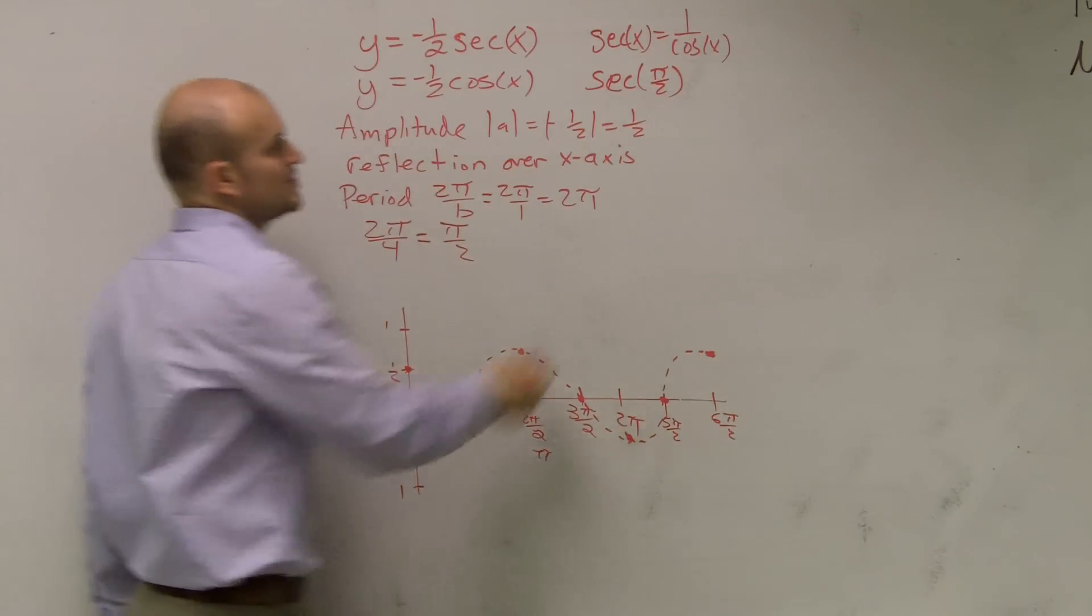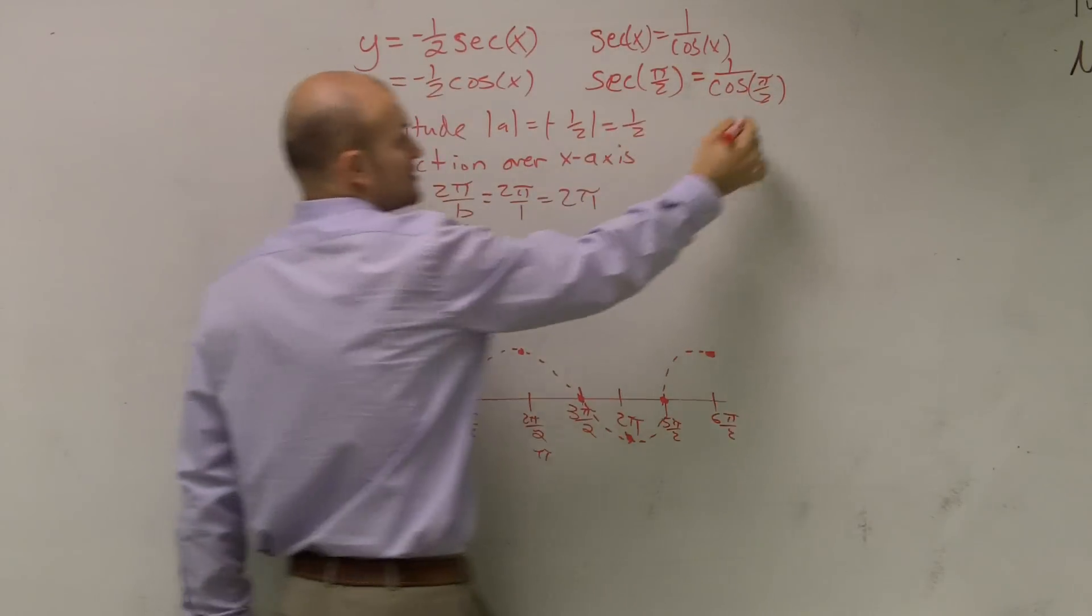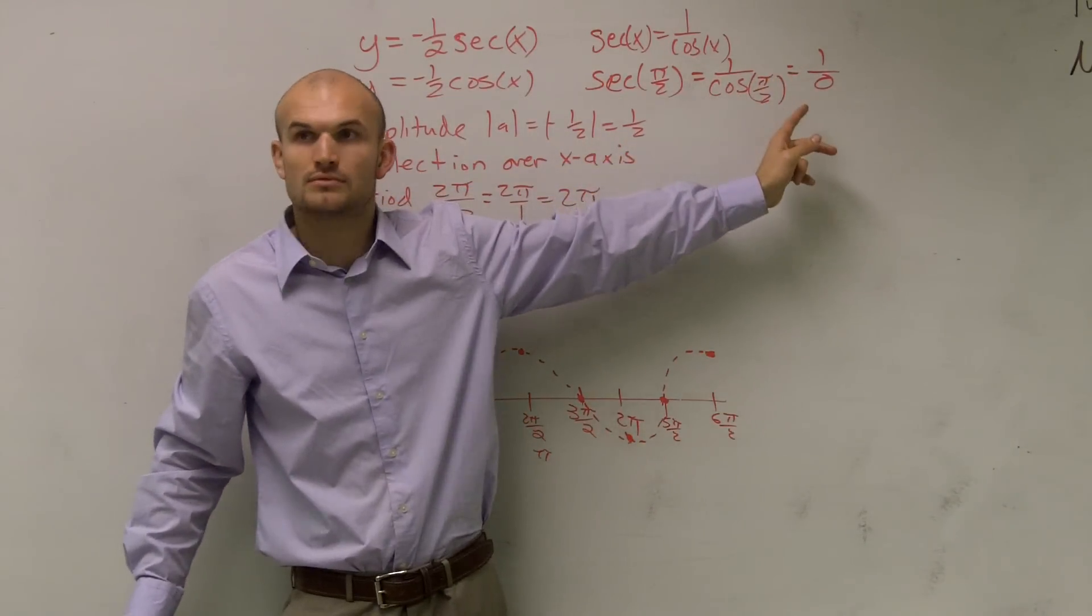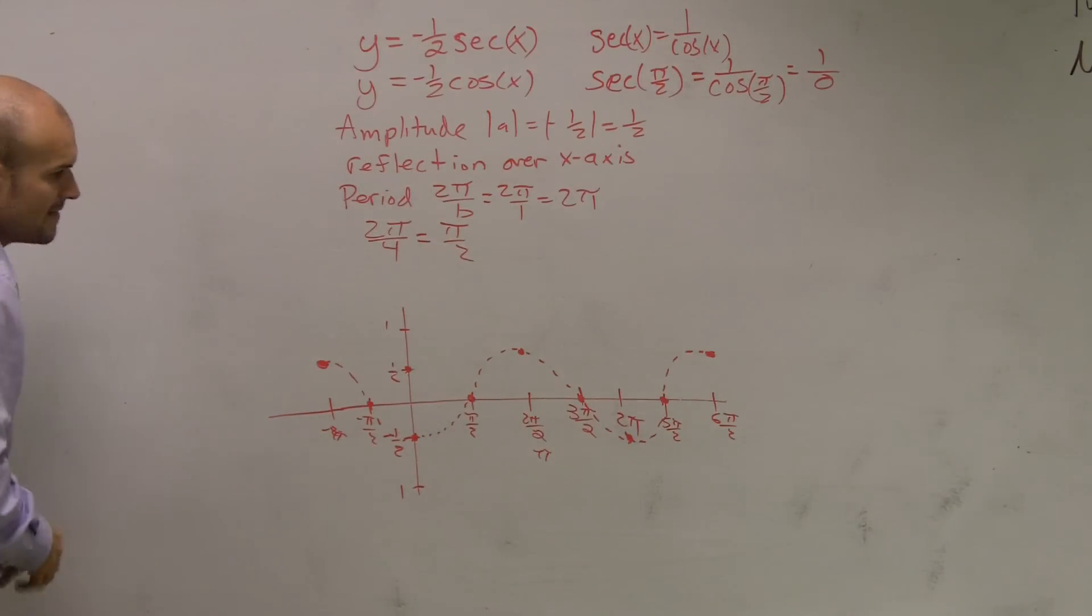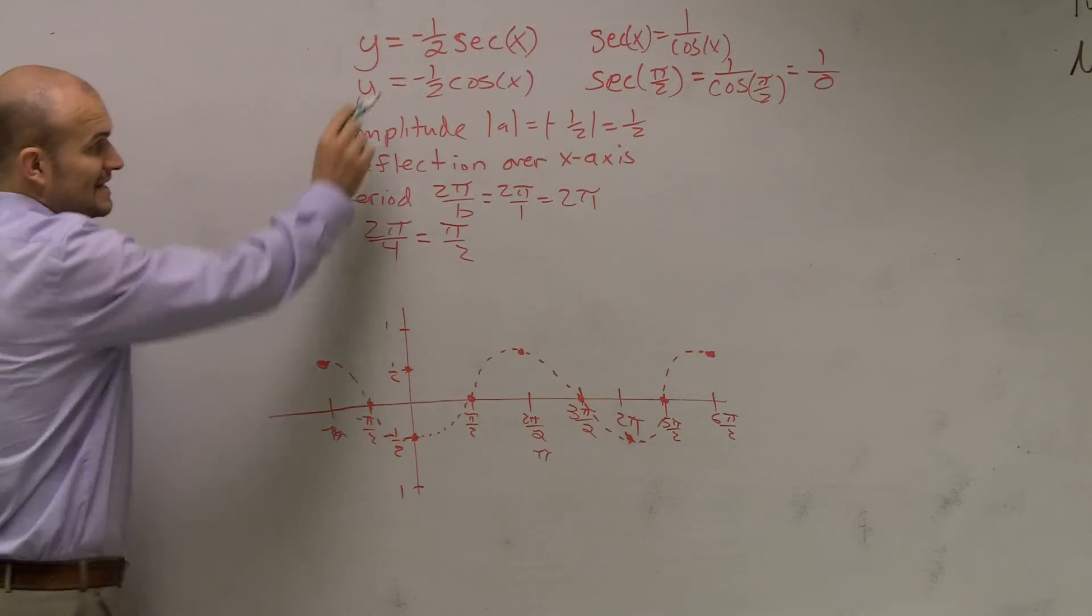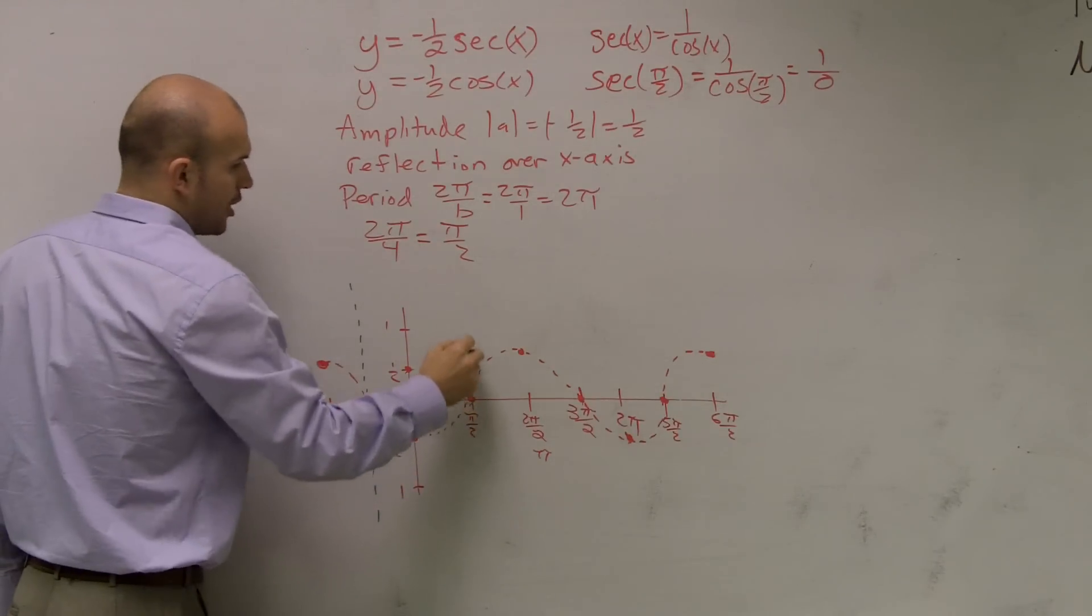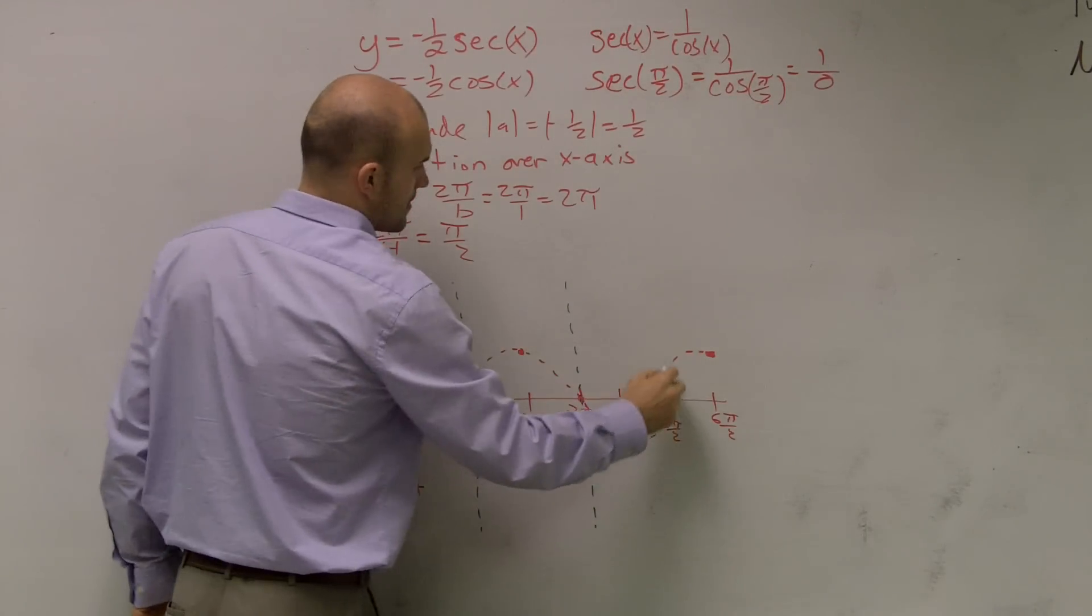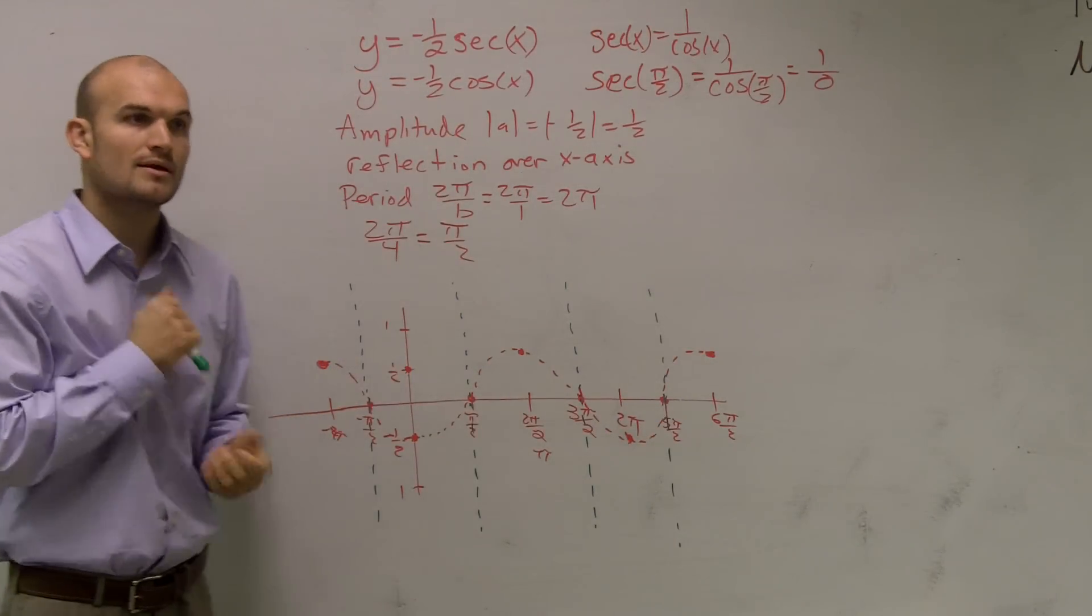Can you evaluate for 1 over 0? No, that's undefined. It's really important to know and recognize that whenever there's an intercept, that means my cosine equals 0. Therefore, for the secant graph, it's going to be a vertical asymptote. You're going to take all the intercepts for your cosine graph and make a vertical asymptote anywhere there's a 0 of your cosine graph.